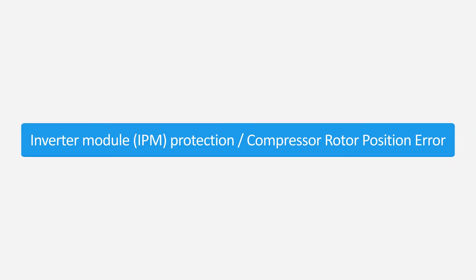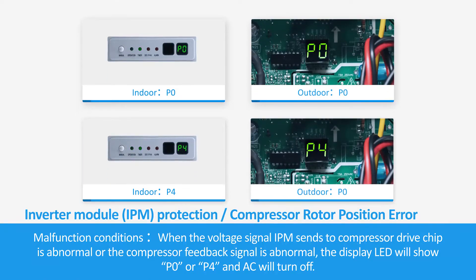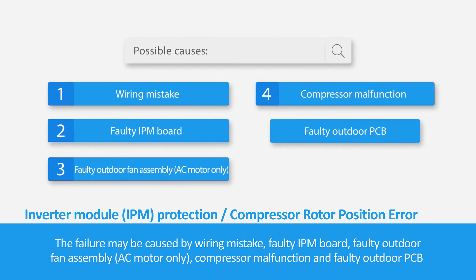Inverter Module IPM Protection — Compressor Rotor Position Error. Malfunction Conditions: When the voltage signal IPM sends to the compressor drive chip is abnormal, or the compressor feedback signal is abnormal, the display LED will show P0 or P4 and the AC will turn off. The failure may be caused by wiring mistake, faulty IPM board, faulty outdoor fan assembly, AC motor only, compressor malfunction, or faulty outdoor PCB.